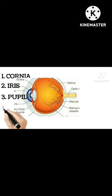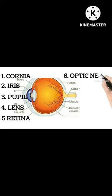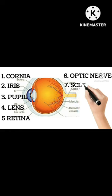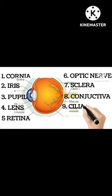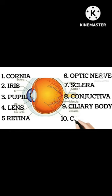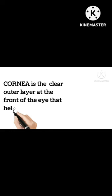Parts of the human eye and its function. Here are some of the main parts of the eye: 1. Cornea, 2. Iris, 3. Pupil, 4. Lens, 5. Retina, 6. Optic Nerve, 7. Sclera, 8. Conjunctiva, 9. Ciliary body, 10. Choroid. The cornea is the clear outer layer at the front of the eye that helps to focus light.